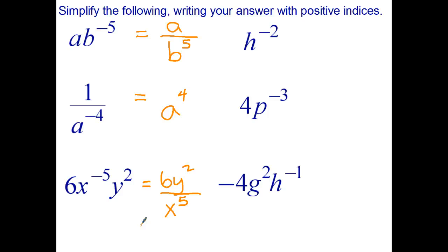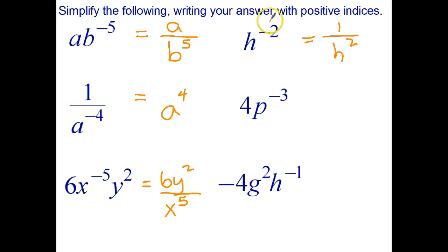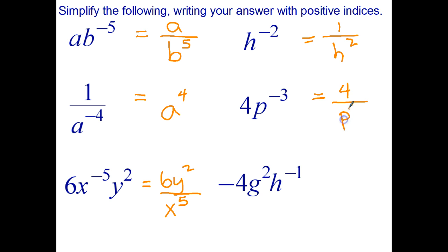Welcome back students. Let's see how you went. We need to write the reciprocal of h to the negative 2, which is 1 over h to the positive 2. Write the reciprocal and change the sign from negative to positive. 4p to the negative 3 — well, the 4 stays in the numerator because it is not raised to a negative power, and the p to the negative 3 becomes p to the power of positive 3 in the denominator.